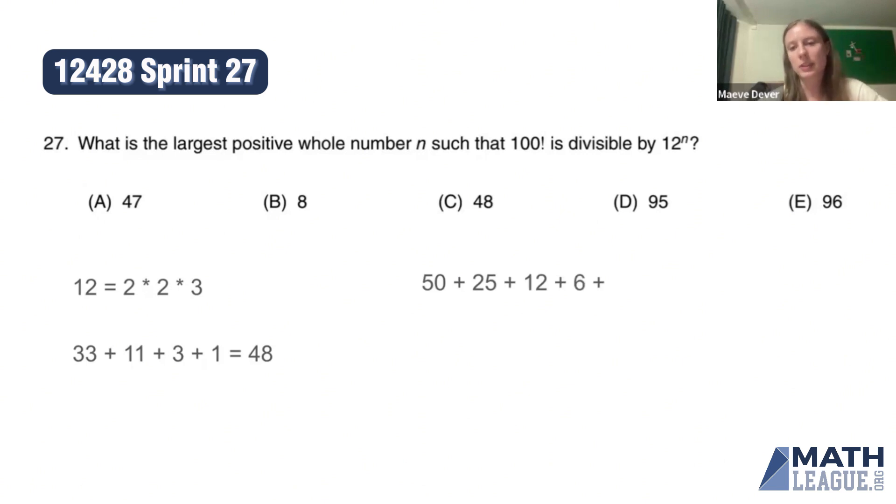Of those, 6 are multiples of 16. Of those, 3 are multiples of 32. And of those, only 1 is a multiple of 64. And again, we can kind of do a sanity check on this. 64 is the only number less than 100 that's divisible by 64. The next number divisible by 64 is 128, and that is bigger than 100. So 100 factorial is divisible by 97 twos. It's divisible by 2 to the 97th. So how many 4s is that? Well, that's 97 divided by 2, which is 48.5.